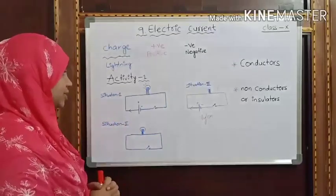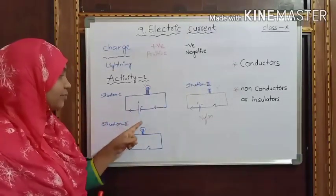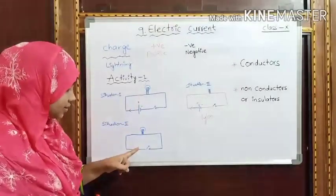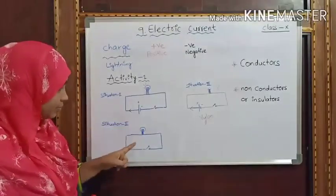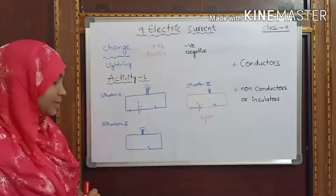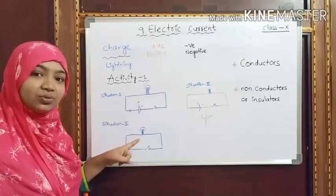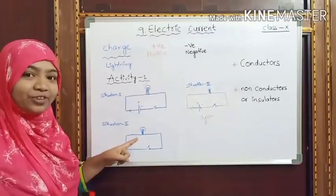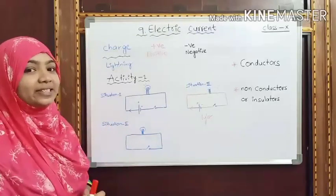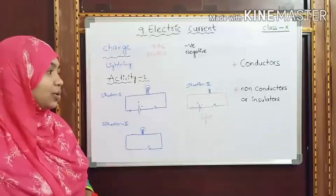In the next situation, what we have to do is just remove the battery from the circuit. I have removed the battery and made all the circuit close again. Does the bulb glow in Situation Two? Obviously the answer is no, because there is no source of energy in the circuit. The bulb does not glow.